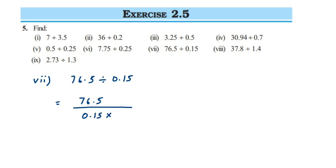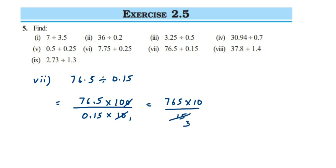Seventh question: 76.5 divided by 0.15. Removing the decimal from 76.5 — one digit — gives 10 in the denominator, making 765. Removing the decimal from 0.15 — two digits — gives 100 in the numerator and 15 in the denominator. Cancel 10 and 100, leaving 10. Now cancel 765 and 15 in the 5 table: 5 threes are 15, 5 ones are 5, remainder 2 making 26; 5 fives are 25, remainder 1; 5 threes are 15. We get 51 multiplied by 10, which is 510. The answer is 510.